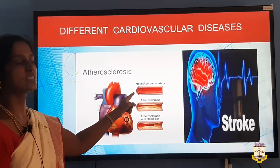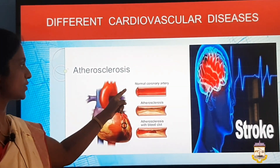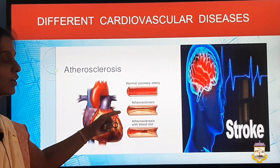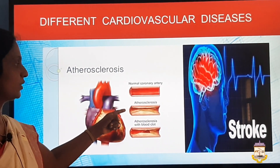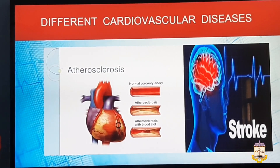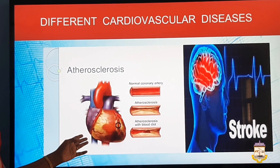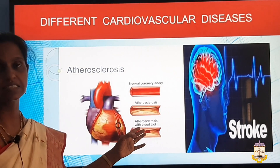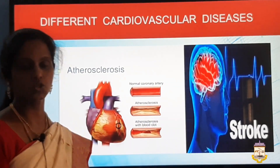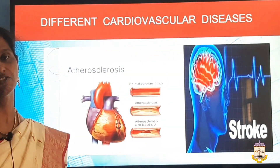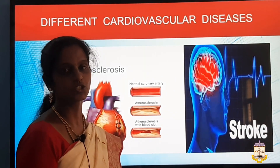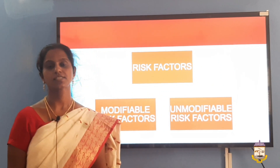The first picture shows a normal coronary artery where blood flows normally. The next picture shows cholesterol deposits in the coronary artery, leading to obstruction of blood flow and resulting in heart attack — this is atherosclerosis. Stroke is the obstruction of blood flow to the brain.